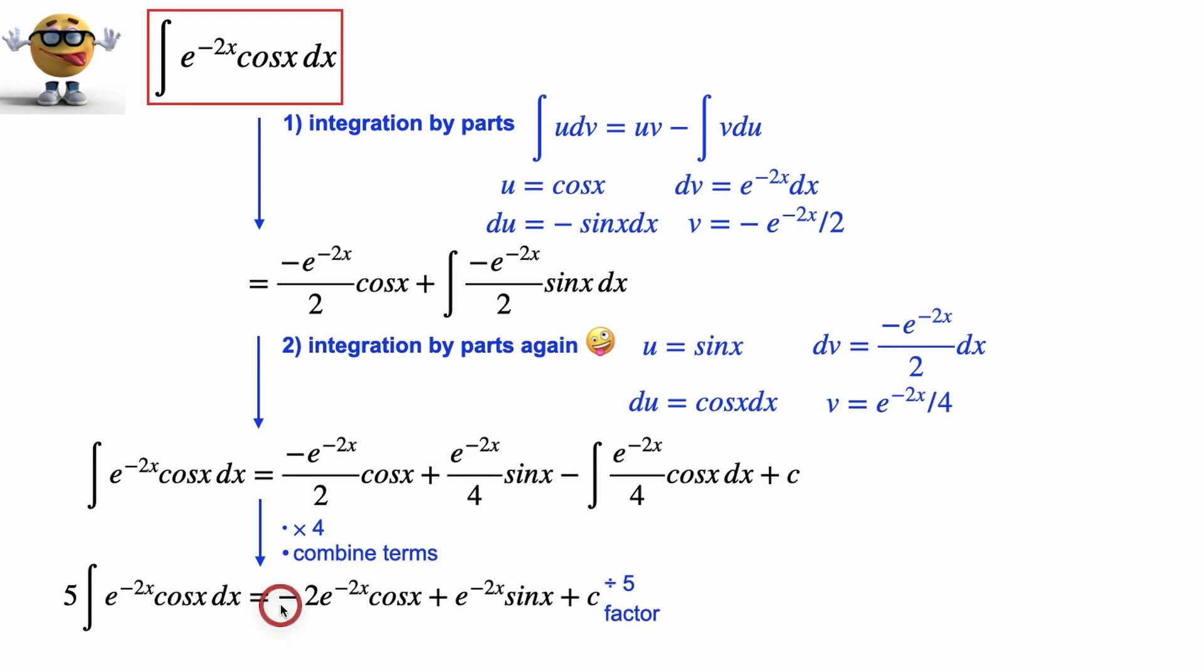And now if we want to know what this integral is, we'll just simply divide by 5. And for fun, I decided to factor out the 1 over 5. Once we divide by 5, we'll have a 1 over 5 here. So I factored that out and the e to the negative 2x to give us the answer of our integral right here in all its glory.